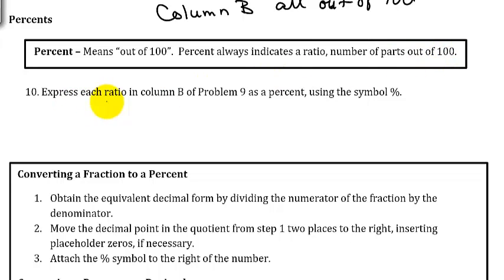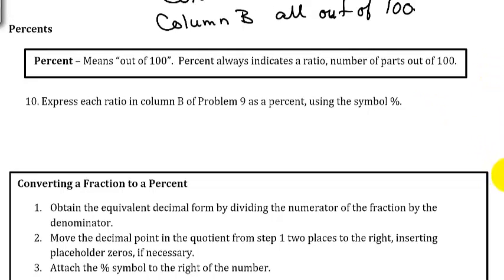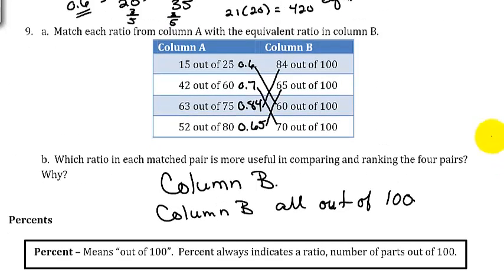We want to express each ratio in column B from problem 9 as a percent using the symbol percent. We're just going to go back up to problem 9 and look at column B. Here's column B, and this is 84 out of 100, so that would be 84%.